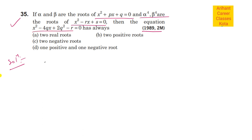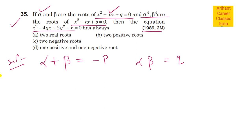यह आपको बताना है इस equation के लिए. सबसे पहले, जो पहली equation है इसके roots alpha और beta हैं. तो sum of roots alpha + beta = minus b by a. यहाँ b की value p है, a की value one है, तो alpha + beta = -p. और alpha × beta = q by one = q.